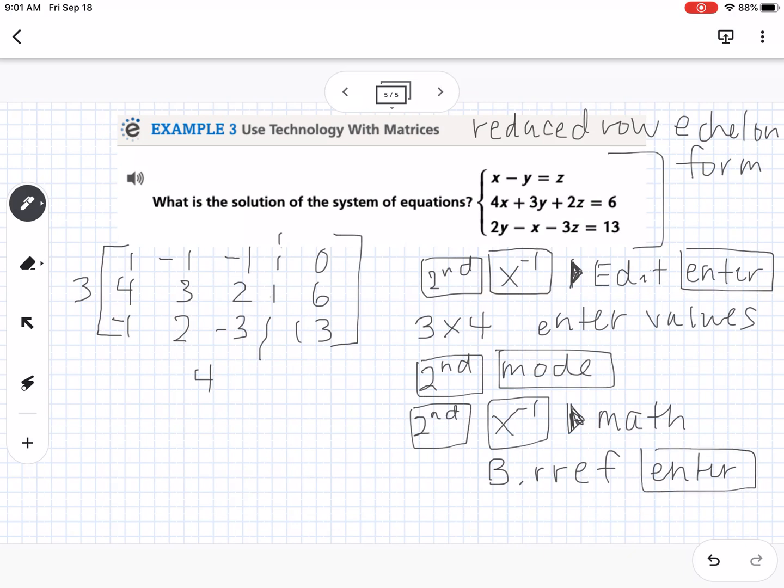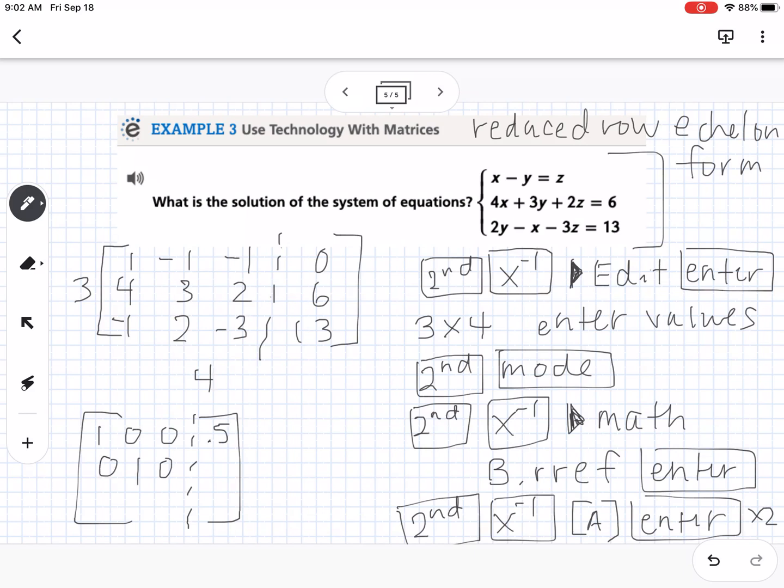Then you have to put in the matrix that you want to reduce. You're going to go 2nd, x to the negative 1, then find matrix A, assuming that's where you put your things in, and then hit enter again. I believe you have to hit enter twice. Then it will give you your reduced matrix, which I will write over here. It should be 1, 0, 0, 0.5, 0, 1, 0, 3, 0, 0, 1, negative 2.5. So that means our solution is 0.5, 3, negative 2.5.